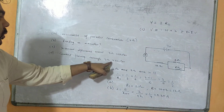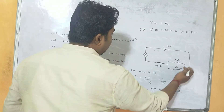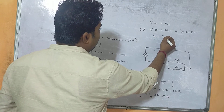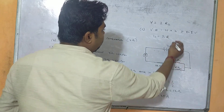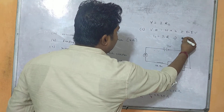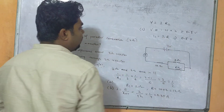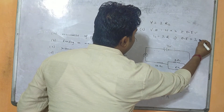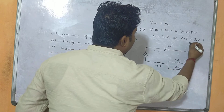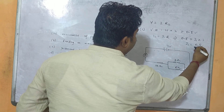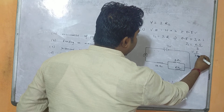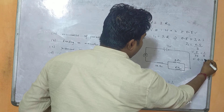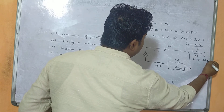Next we calculate the current flowing through the 3 ohm resistor. We know V1 = I1 × R. V1 is 0.5 volt (just calculated), and R is 3 ohm. So I1 = 0.5/3 = 5/30 = 1/6 ≈ 0.166 ampere.